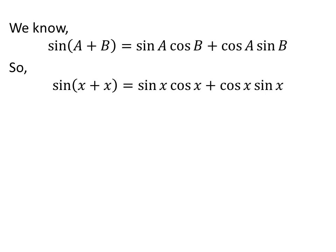If a equals x and b equals x, then sine of x plus x equals sine x times cosine x plus cosine x times sine x.